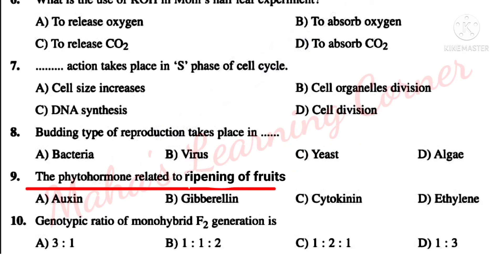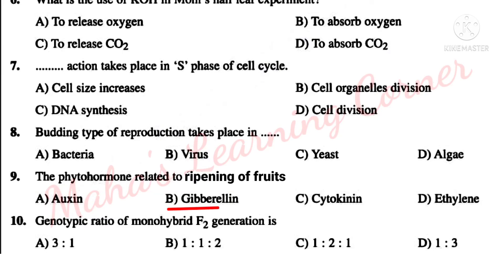The phytohormone related to ripening of fruits — Option A: Auxin. Option B: Gibberellin. Option C: Cytokinin. Option D: Ethylene. Correct answer: Option D — Ethylene. Ethylene is useful for the ripening of fruits.